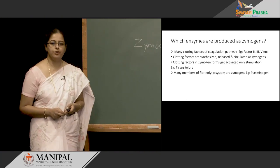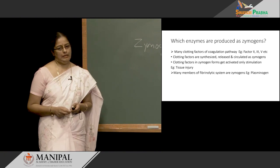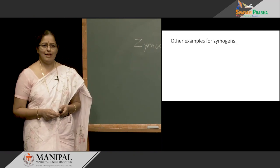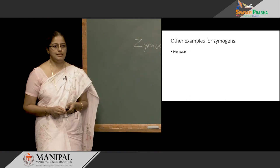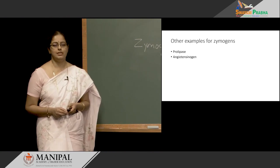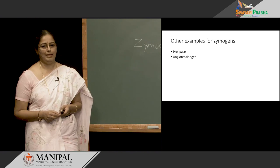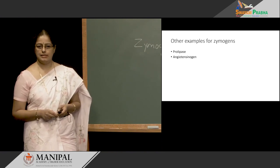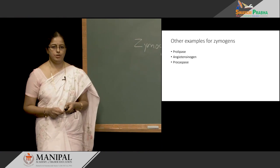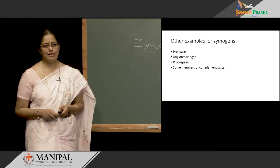We also have members of the fibrinolytic system which act as Zymogens. For example, plasminogen, which has a role in clot lysis, is also circulating in the blood as a Zymogen. Further examples include pro-lipase, again a pancreatic enzyme which is activated only in the duodenum. We have angiotensinogen, a member of the renin-angiotensin system involved in controlling blood pressure and fluid balance, which is also synthesized and circulated as a Zymogen. We have pro-caspase, an enzyme of apoptosis, also present as a Zymogen. Some members of the complement system, which is involved in providing immunity to the body, are also produced as Zymogens.